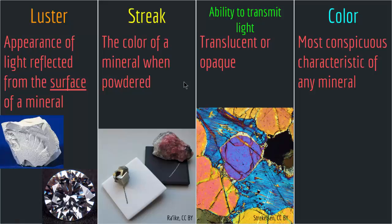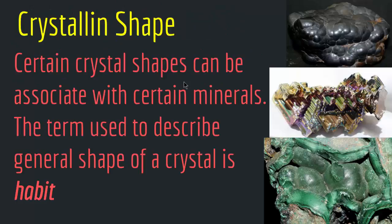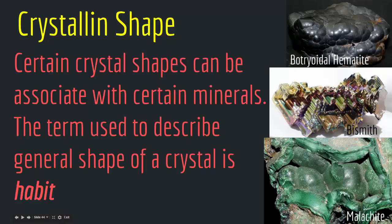The next mineral identification tool is crystalline shape. Certain crystal shapes can be associated with certain minerals. The term used to describe the general shape of a crystal is habit. For example, this is malachite, and its crystalline shape resembles a human breast — when we see this shape, we immediately know it's malachite. These concave step-like sharp crystals are bismuth — we immediately recognize the mineral from the shape. This grape-like crystalline shape is botryoidal hematite — when we see it, we immediately know it's hematite. By identifying crystalline shape, we can identify the associated mineral.